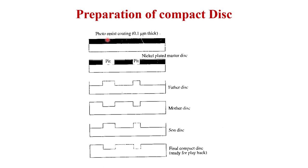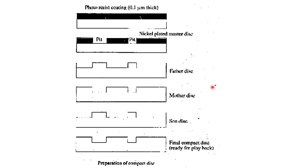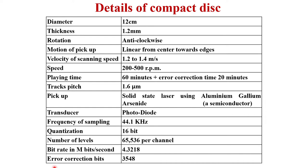First you have the photoresist coating of 0.1 micrometer. Then the nickel-plated master disc is created where you actually put pits and flats — your data. Then there is a mirror image of this nickel-plated master disc which is the father disc. From the father disc, several mother discs can be derived. From each mother disc, several son discs can be derived — which are exactly the reverse of the mother disc. The replica of the son disc is the final compact disc, which is the same as the original. This is the processing done to make the compact disc in its final version.